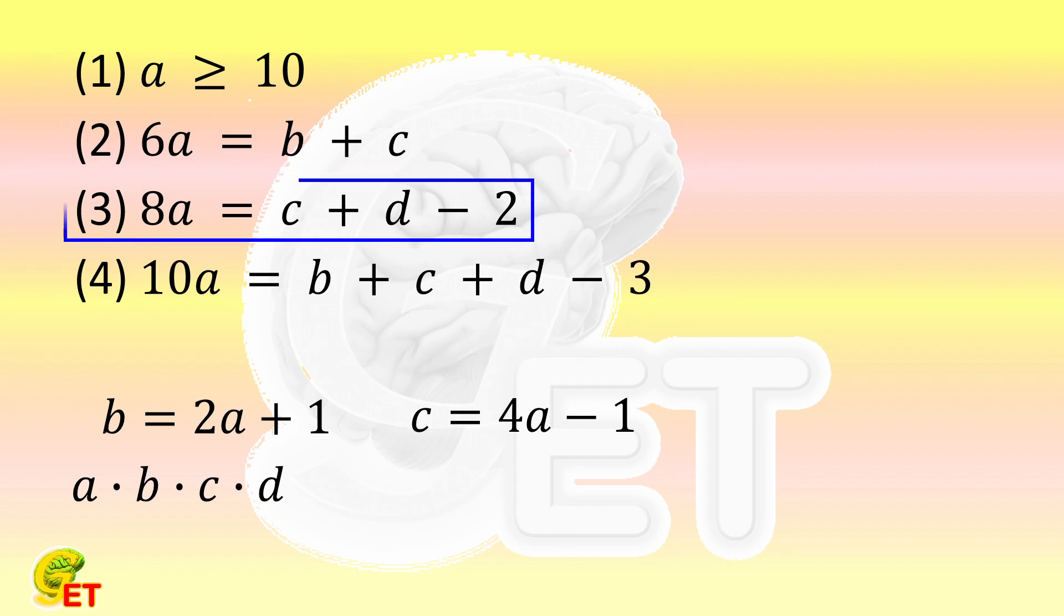Bringing it into the third equation, and we get 8 times A equals 4 times A minus 1 plus D minus 2. D is therefore equal to 4 times A plus 3.